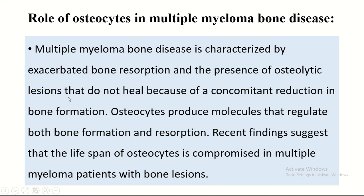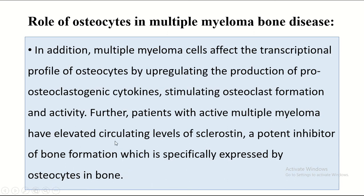Multiple myeloma bone disease is characterized by exacerbated bone resorption and the presence of osteolytic lesions that do not heal, due to concomitant reductions in bone formation. Osteocytes produce molecules that regulate both bone formation and resorption. Recent findings show that the lifespan of osteocytes is compromised in multiple myeloma patients with bone lesions. Additionally, multiple myeloma cells affect the transcriptional profile of osteocytes by upregulating production of pro-osteoclastogenic cytokines, stimulating osteoclast formation and activity. Furthermore, patients with active multiple myeloma have elevated circulating levels of sclerostin, a potent inhibitor of bone formation specially expressed in osteocytes.